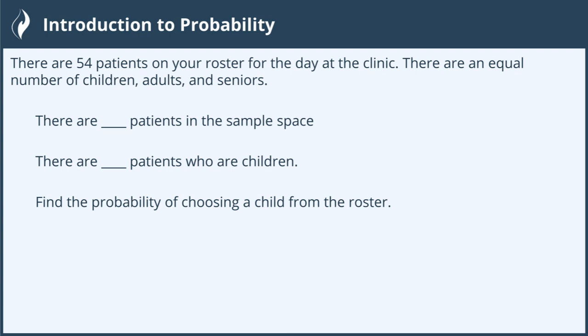So we know that there are an even amount of each. Now, they ask us: there are blank patients in the sample space, there are blank patients who are children, and then the goal is to find the probability of choosing one child from the roster.